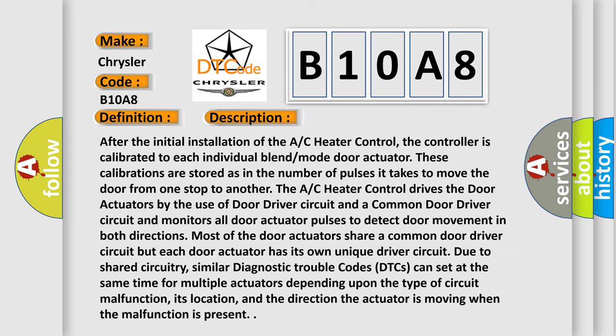After the initial installation of the AC heater control, the controller is calibrated to each individual blend mode door actuator. These calibrations are stored as in the number of pulses it takes to move the door from one stop to another. The AC heater control drives the door actuators by the use of door driver circuit and a common door driver circuit and monitors all door actuator pulses to detect door movement in both directions. Most of the door actuators share a common door driver circuit, but each door actuator has its own unique driver circuit.